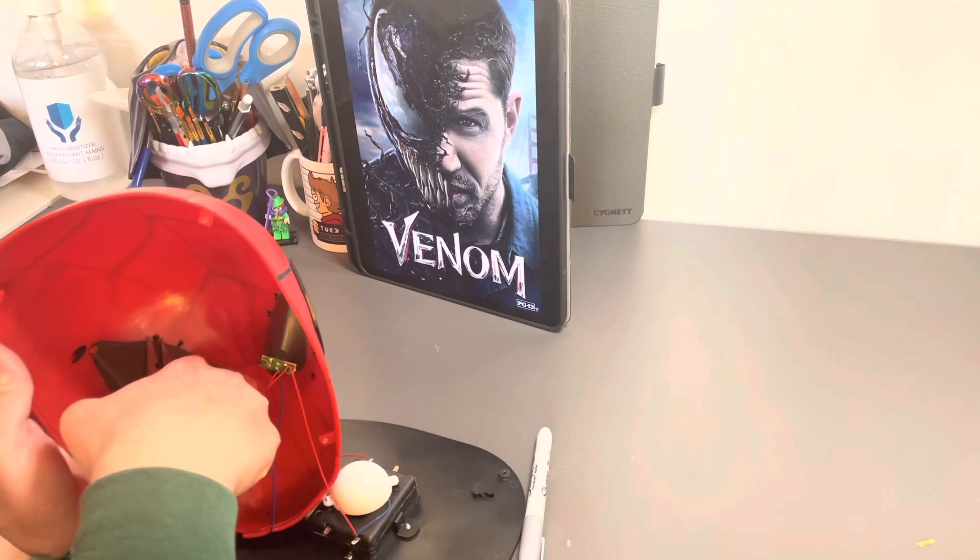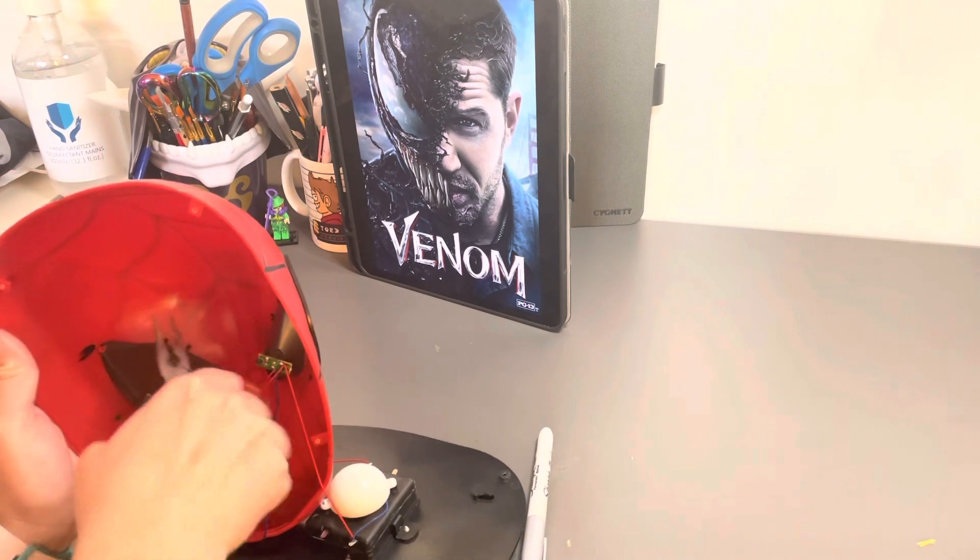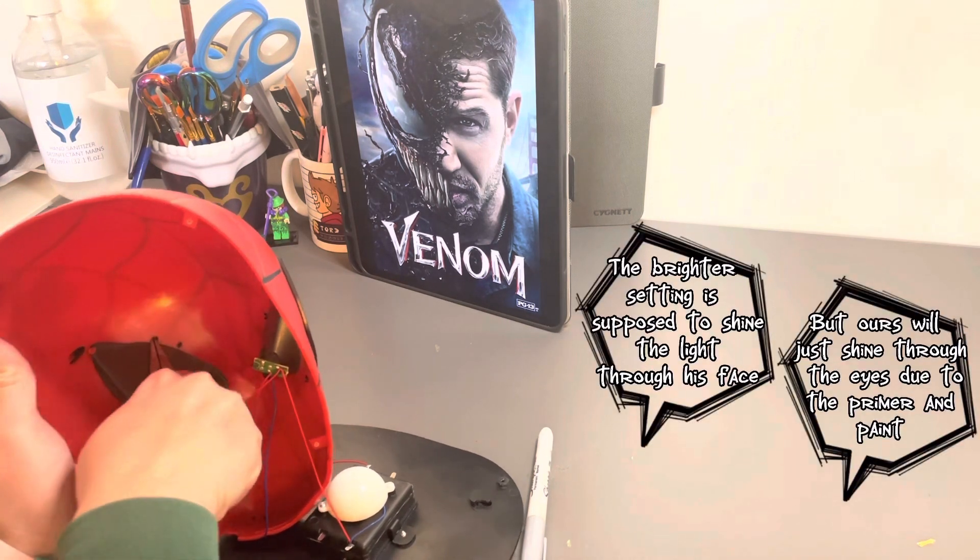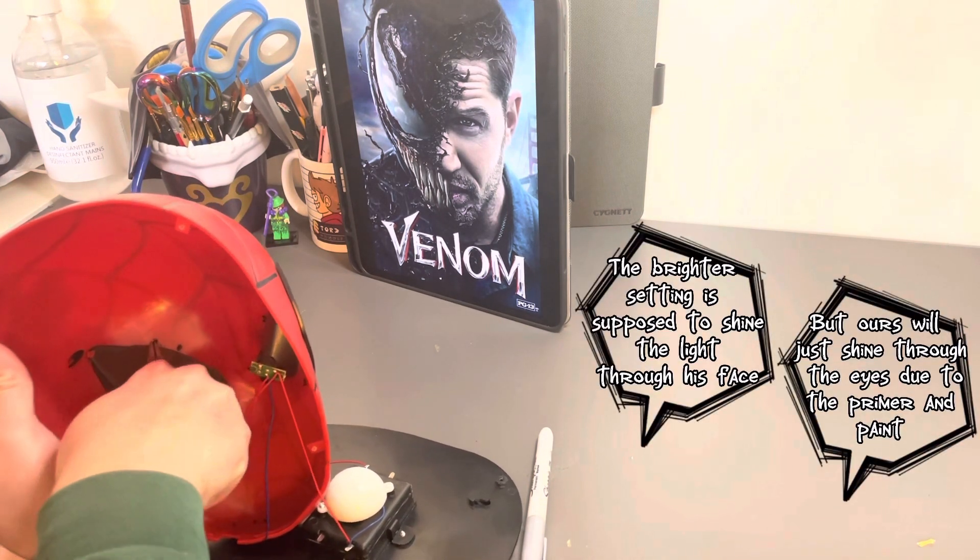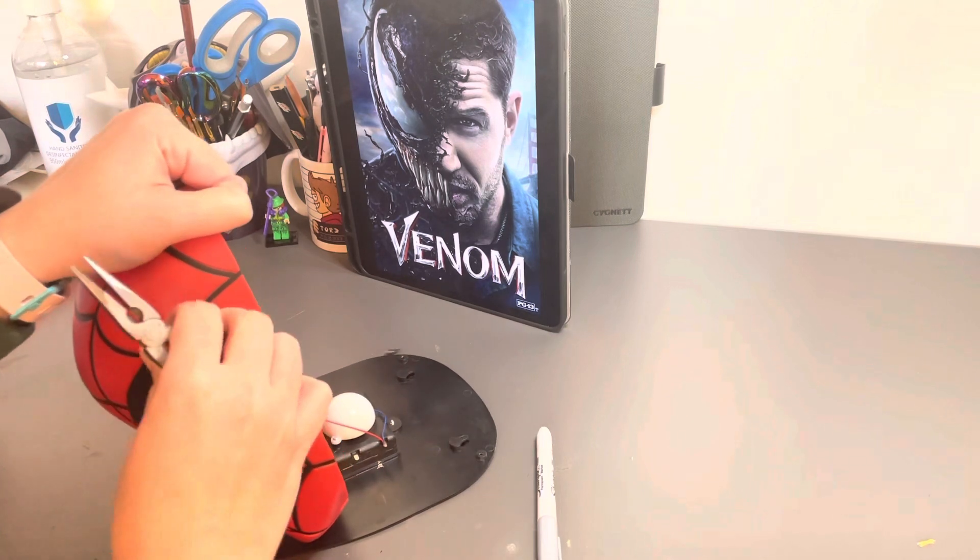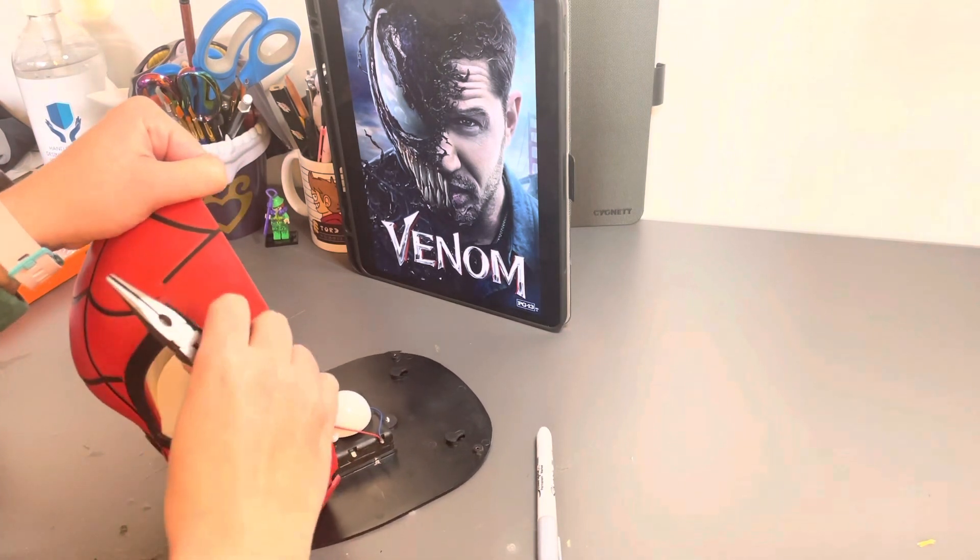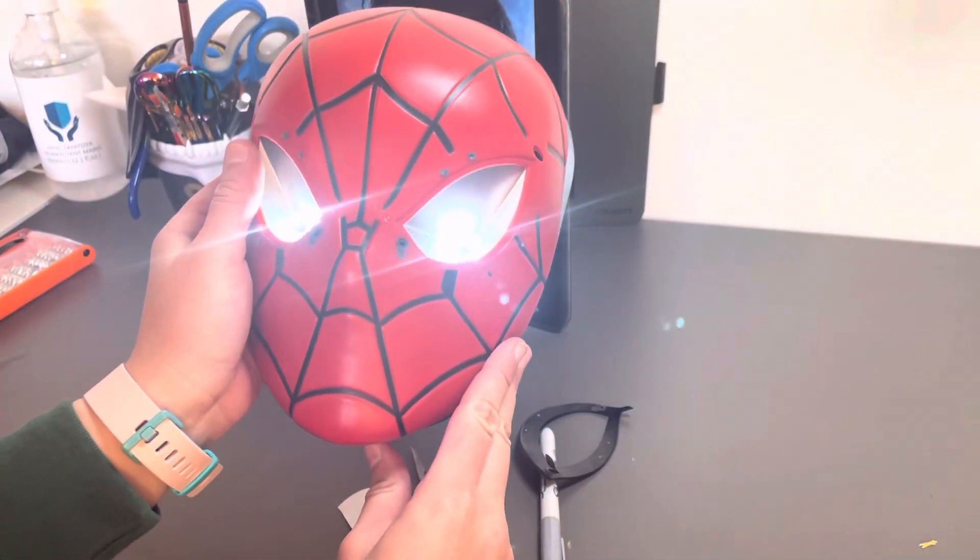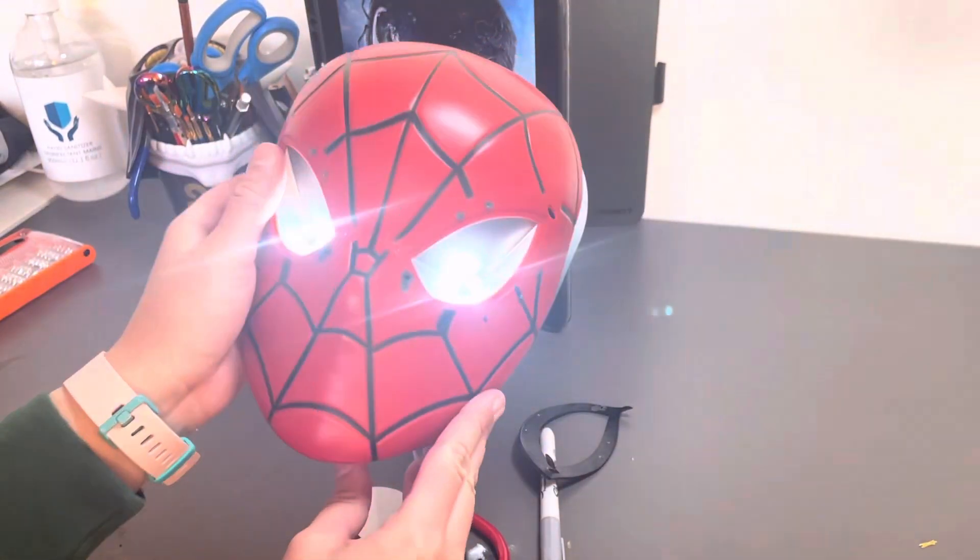This nightlight has two brightness settings. The dimmer setting activates just the LEDs in his eyes and the brighter setting does that big circular light in the back there as well. Because the eye lights are attached to the eyepieces, the first thing we're going to do is rip those out. I used a pair of pliers to break the support pegs from the inside and that made the outer eyepieces super easy to remove.